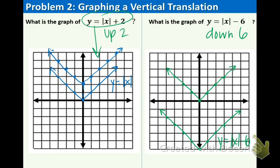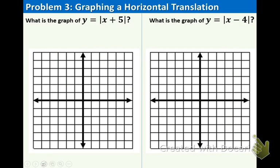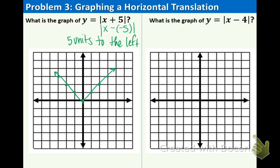Now let's look at what horizontal translations look like — the numbers are inside the symbols. Remember, when you see a plus sign, it's technically going to the left. Plot the parent graph again and we are going 5 units to the left. Start at (0, 0) and count: 1, 2, 3, 4, 5 — that's where it starts — and then it just goes up from there. So that is the answer: Y equals Absolute Value of X plus 5. Make sure you label your graph.